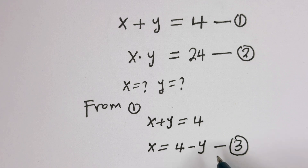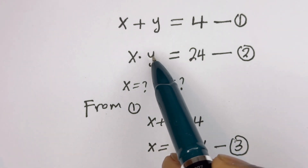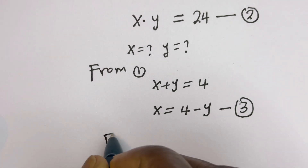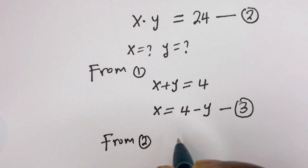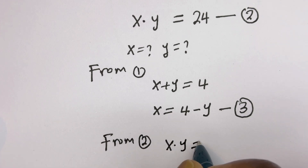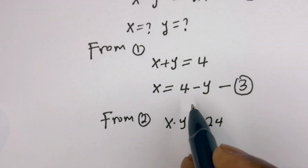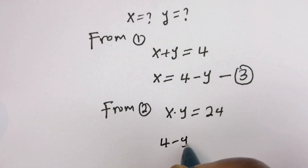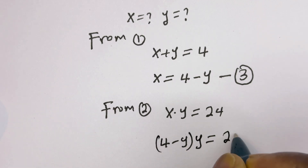We can now substitute equation 3 into our equation 2. That is, from equation 2, we have s multiplied by y is equal to 24. Then when s is 4 minus y, we have 4 minus y in bracket multiplied by y is equal to 24.